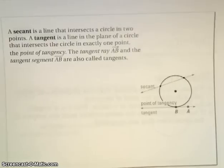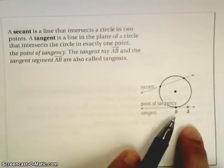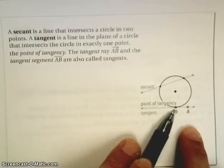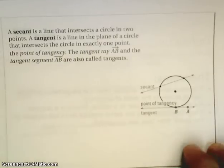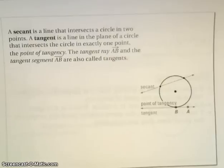A tangent line, on the other hand, only intersects the circle one time. And that special point that it crosses is called the point of tangency. This particular line here is considered tangent to the circle.